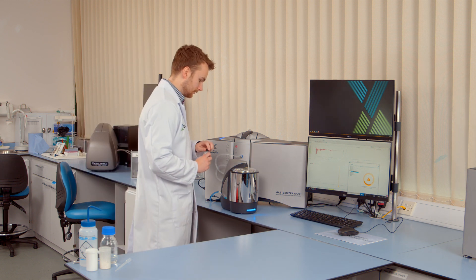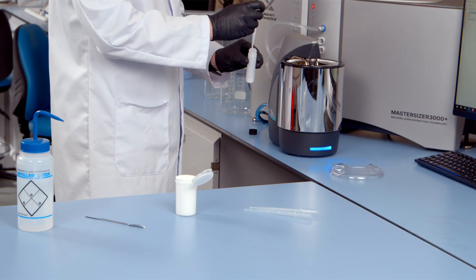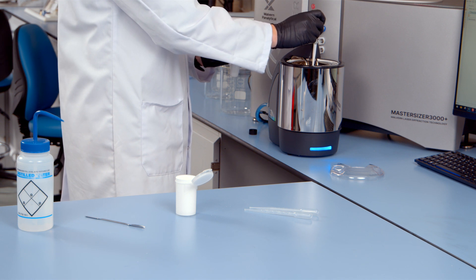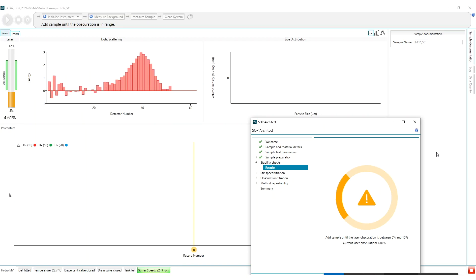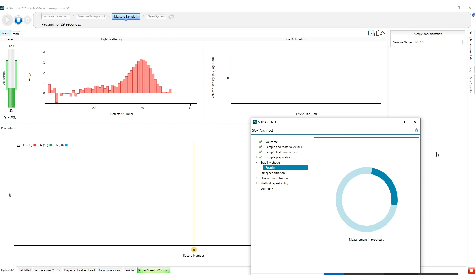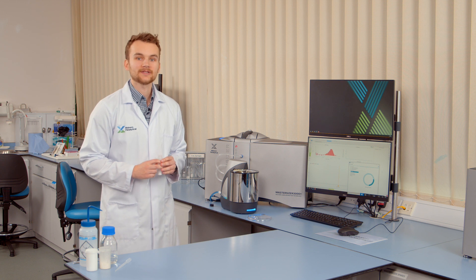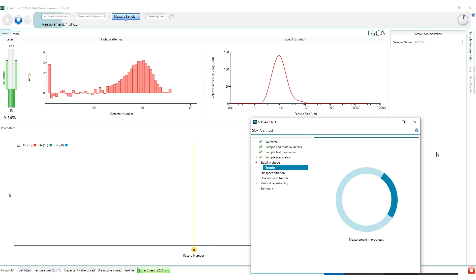So now that the laser has been correctly aligned and the background measured we can now add the sample until we reach the desired obscuration value. Once we've got into this green zone there will now be a pause of 30 seconds to allow the material to disperse before we'll carry out a series of six measurements to help determine the sample stability.